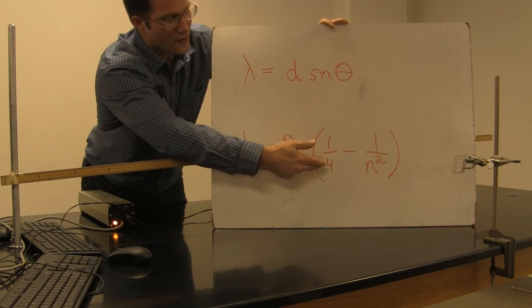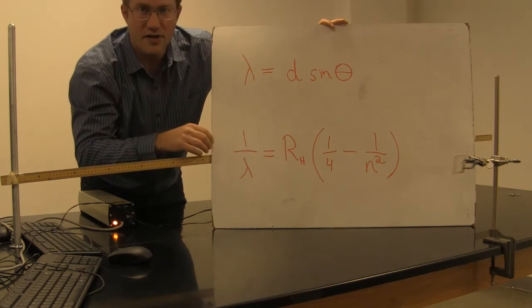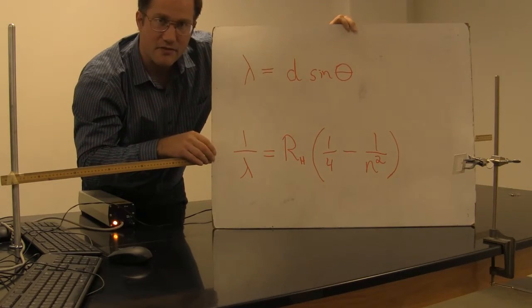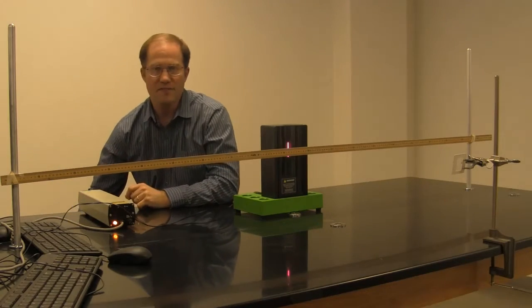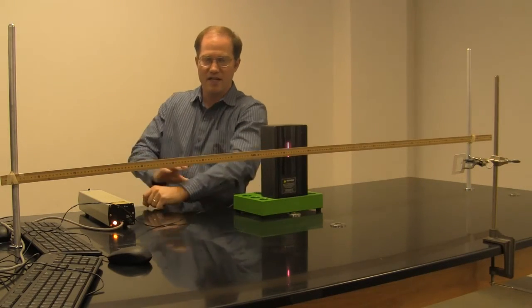times one-fourth minus one over n squared. Now, n is an integer value that sort of corresponds to a drop in energy states.